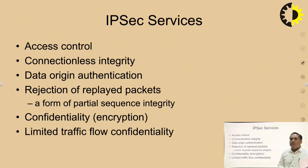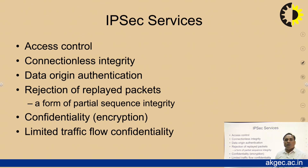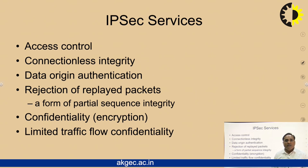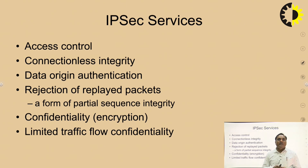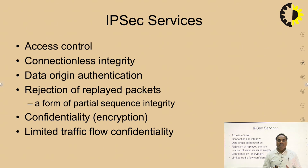IPv6 secure services are divided into a few important points. First is access control — how you are going to access the information and who will permit access from one end to another. Next is connectionless integrity. There are two types of services: connection-oriented, where you first establish a connection and then transmit information, and connectionless, where without establishing a formal connection you can transmit your information over Wi-Fi or a network.